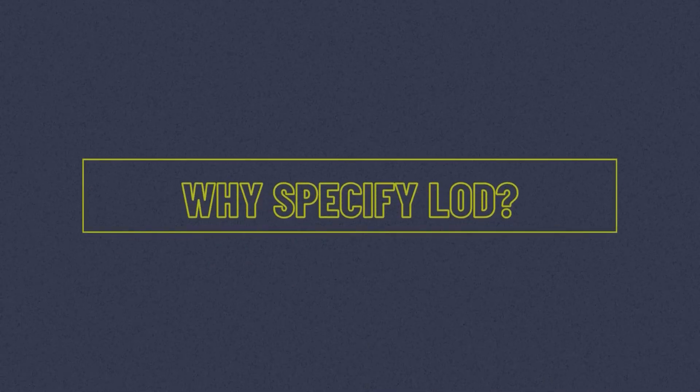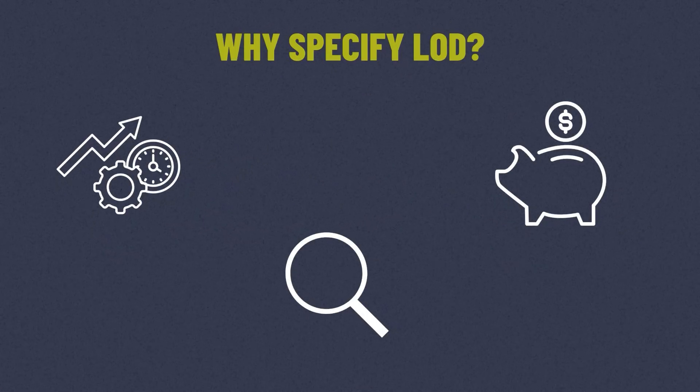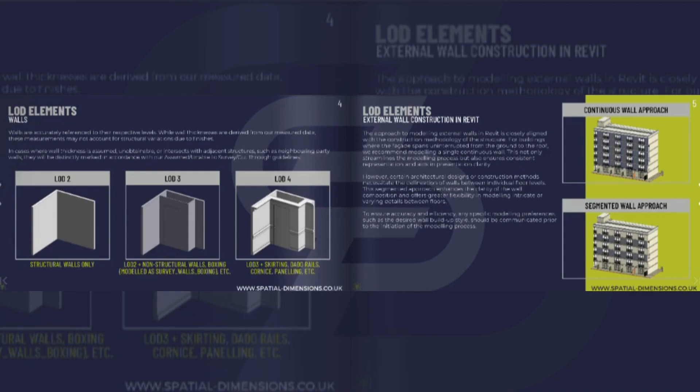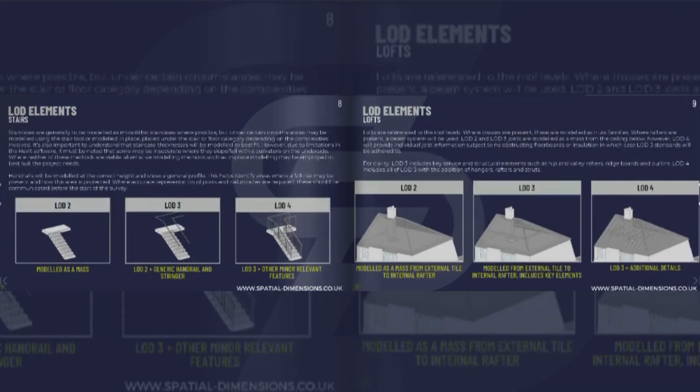So what is LOD? It's like the roadmap for your project, ensuring you have the right details at the right time — whether you're planning, building or designing, it's the difference between smooth execution and costly surprises. In summary, level of detail in 3D models ensures efficiency, accuracy and cost effectiveness. At Spatial Dimensions, we've created a free guide to download that goes into a lot more detail than this explainer video. The link is in the description below — feel free to download it.